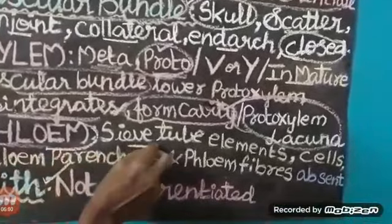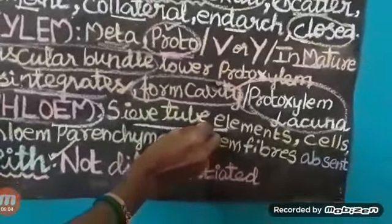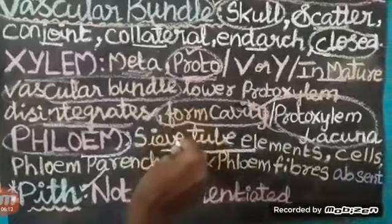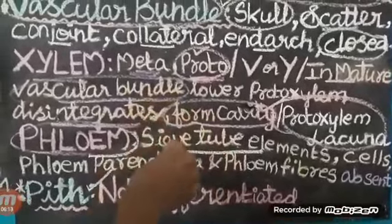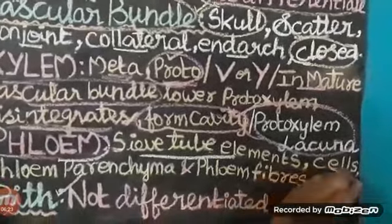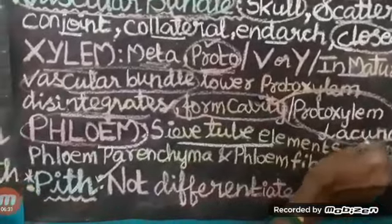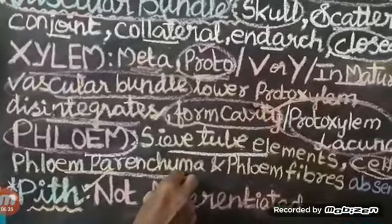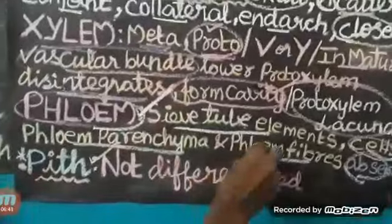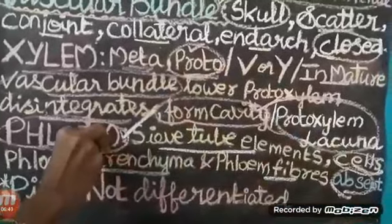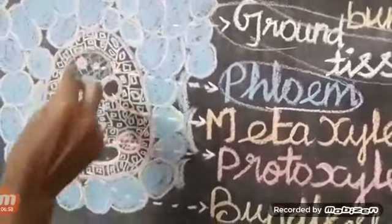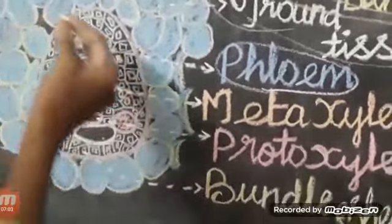Phloem is composed of sieve tube elements. Sieve tube elements are a series of elements joined end to end to form a sieve plate. Companion cells are living nucleated cells. Phloem parenchyma and phloem fibers are always absent in the phloem of monocot stems.